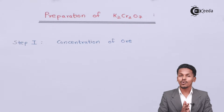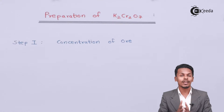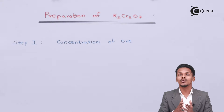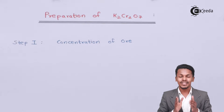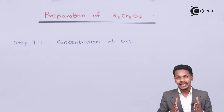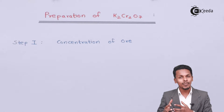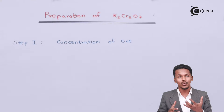In this topic I am going to talk about the preparation of potassium dichromate, that is K₂Cr₂O₇, from its ore. There are various steps involved in preparing K₂Cr₂O₇ from its ore.